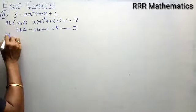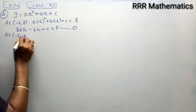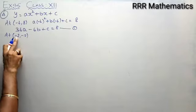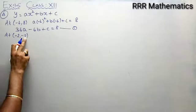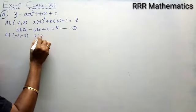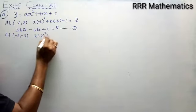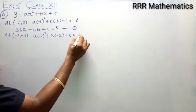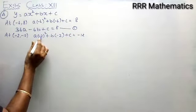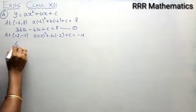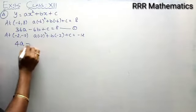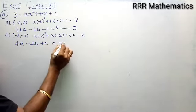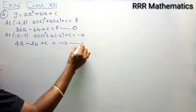Next point, (−2, −12). That is, x = −2, y = −12. So, a(−2)² + b(−2) + c = −12. Simplify: 4a − 2b + c = −12. I will take this as equation 2.